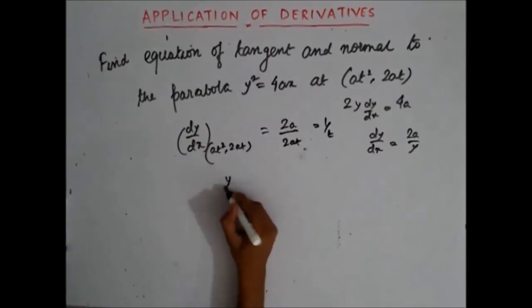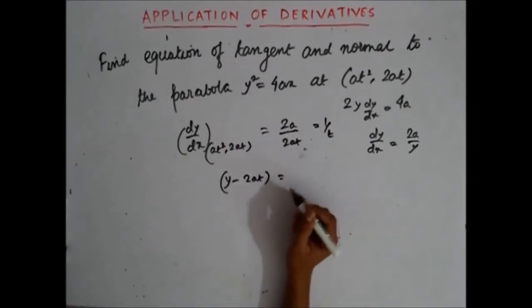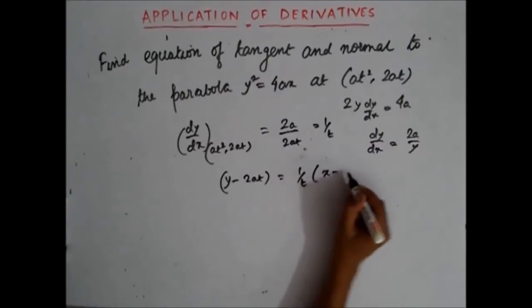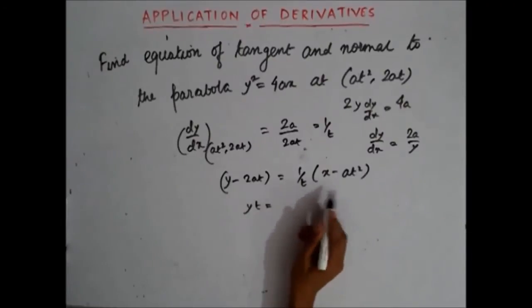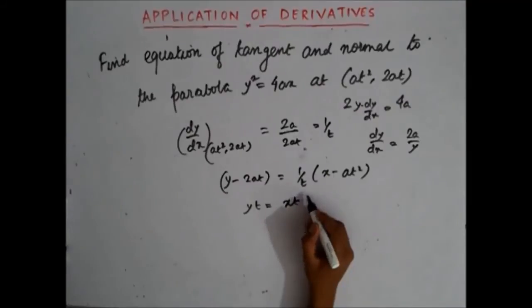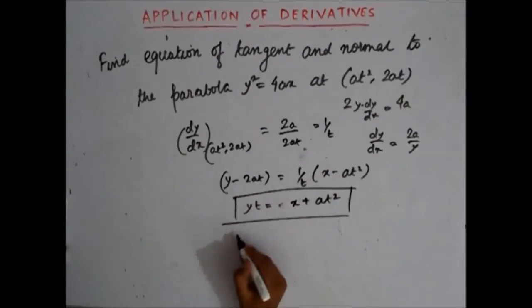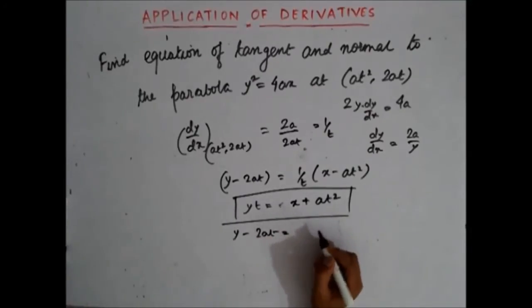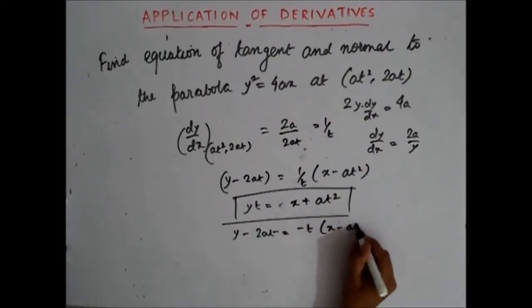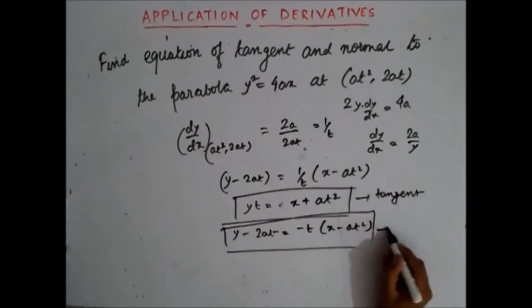The equation of the tangent is y - y1 = m(x - x1), where m = 1/t. So: y - 2at = (1/t)(x - at²), which gives yt - 2at² = x - at², and simplifying: yt = x + at². This is the equation of the tangent. Similarly, for the normal, the slope is -t (negative reciprocal of tangent slope), giving: y - 2at = -t(x - at²). This is the equation of the normal.